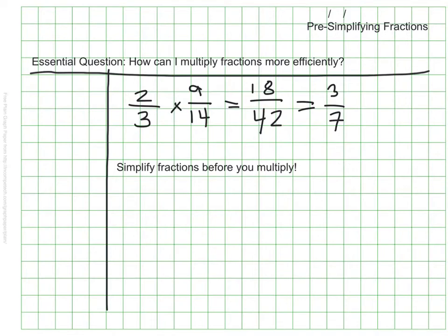Let me show you how it works by going back to my original number sentence. Before I multiply I want to look for any numbers that can be simplified. Here's the trick. I can simplify any numerator with any denominator.